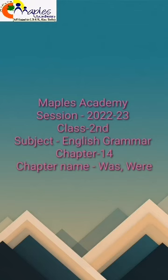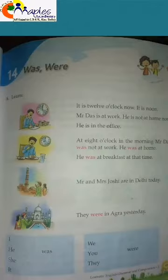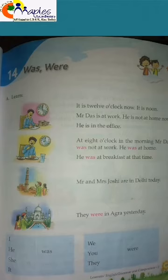Hello students, today we are going to read chapter 14 in English grammar. The name of this chapter is 'was/were'. In this lesson, we are going to learn how to use 'to be' in the past — was and were.